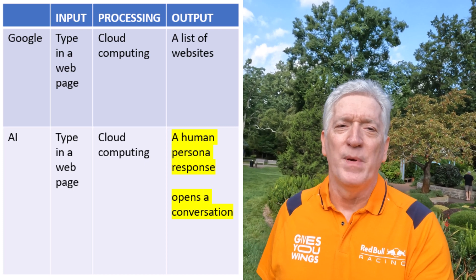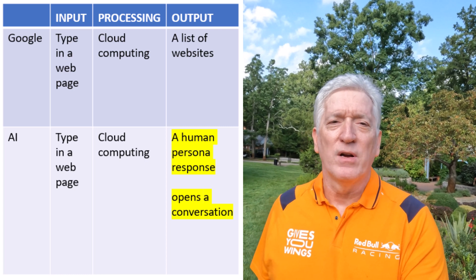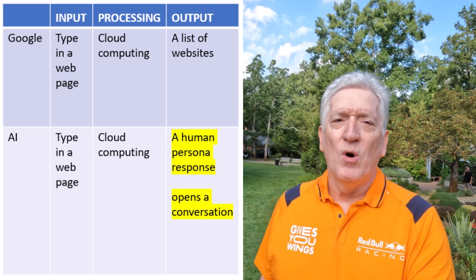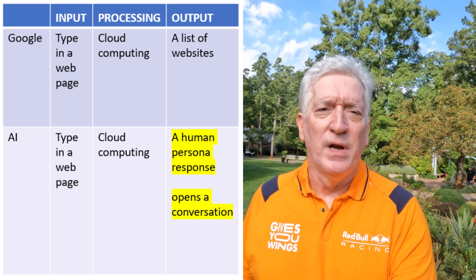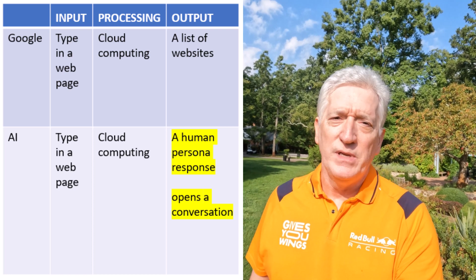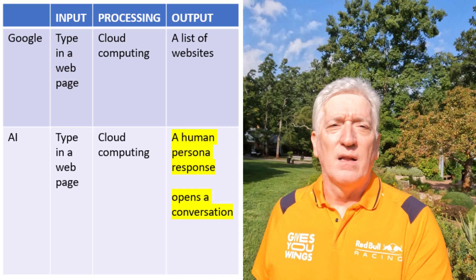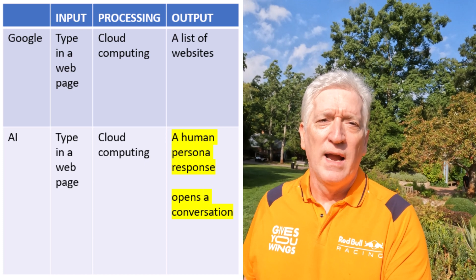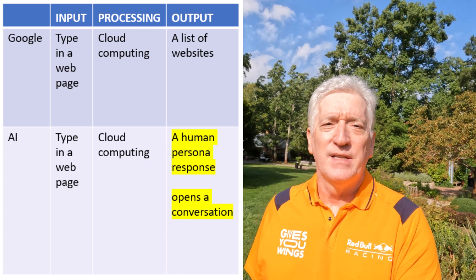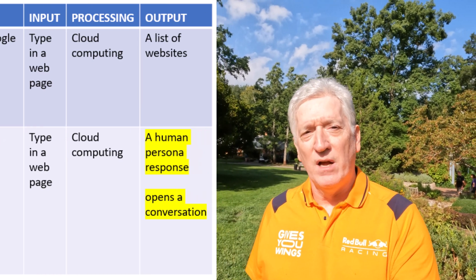Artificial intelligence does an extra step beyond that — it processes the information and presents it like a human being talking back to you in a conversation. You get a result back and then you can tailor it with follow-up questions: zoom in on an area of expertise, a limited time period, or something specific you're looking for. That's the basic difference between the Google model and the artificial intelligence model.